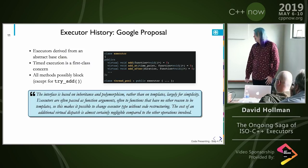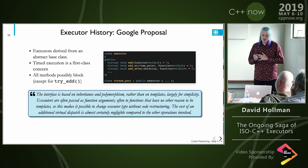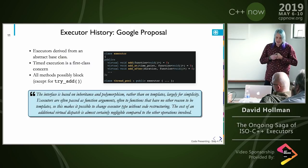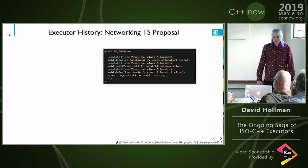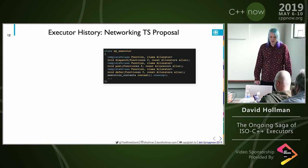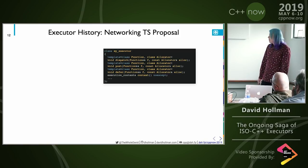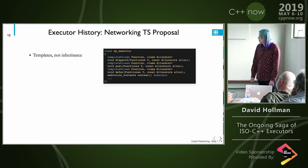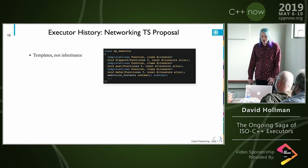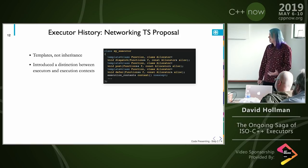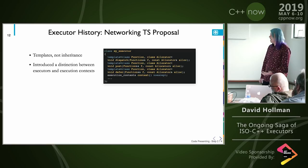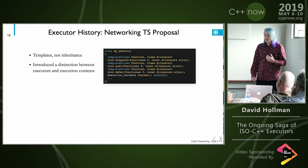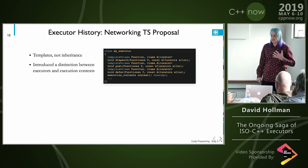Here's a quote from the paper about inheritance: the interface was based on inheritance polymorphism because they said the overhead should be pretty negligible — which is interesting given the modern direction of executors. The Networking TS used templates rather than inheritance, so a little more modern in that respect. It introduced this distinction between executors and the underlying context — the first time we see an executor described as a handle to an execution context rather than the context itself.